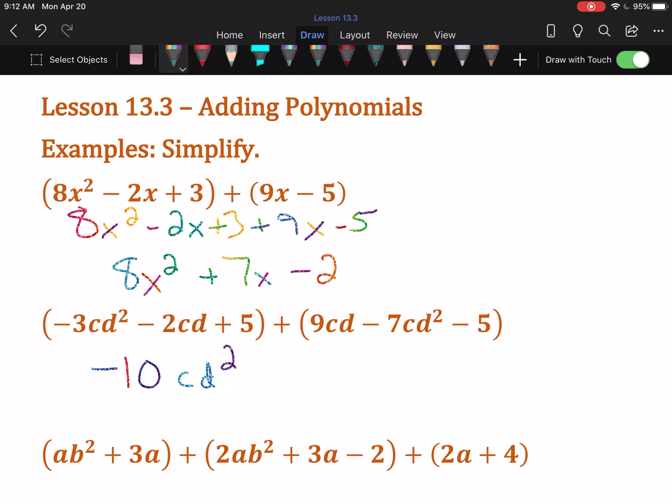Now I'll look at my cds. I have -2cd in the first set of parentheses. There's a positive 9cd in the second set. -2 and 9 is 7, positive 7cd. And I have a positive 5 and a -5 as far as number terms go, and they cancel. Positive 5 minus 5 is 0. No need to write plus 0. The solution here is -10cd² + 7cd.